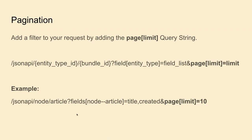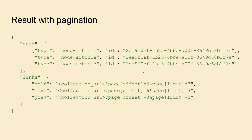You can do pagination because JSON API provides only 50 items per request to avoid DDoS attacks. Set a page limit — for example 10 — and the response will contain the data plus links: the current page, the next page link, and the previous page link. If there is no next link, it's the last page; if there is no previous link, it's the first page.